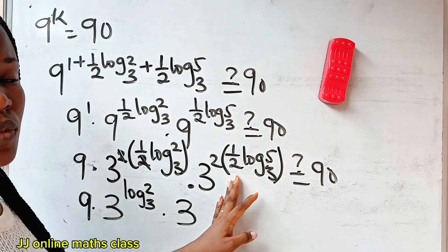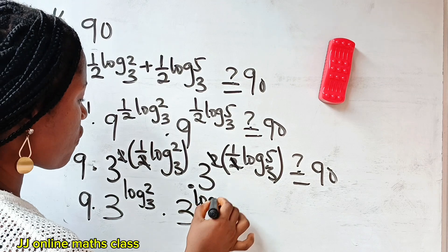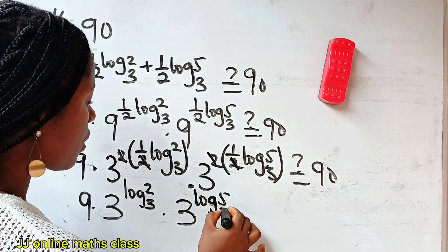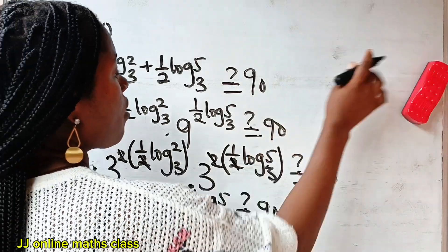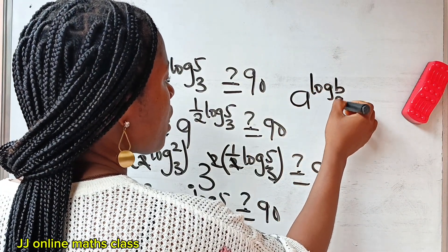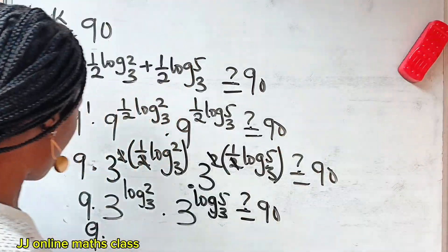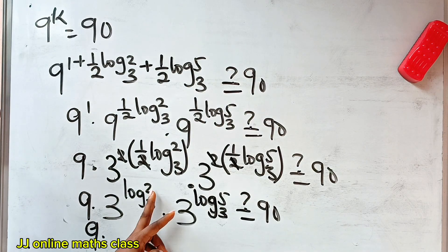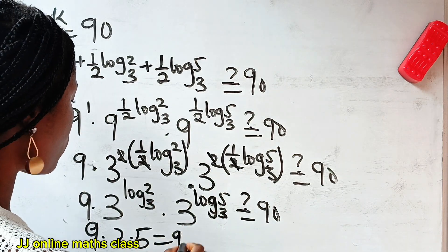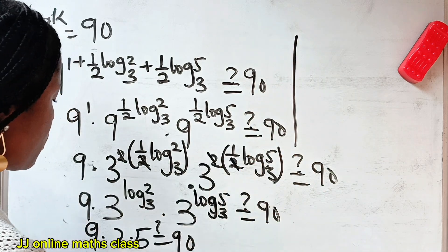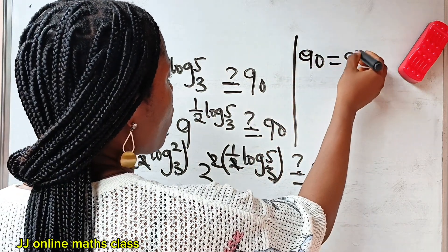We apply the same cancellation here — the 2 and half divide to give 1, leaving log₃5. Now, remember that when you have A to the power of log B base A, once the bases are equal, the whole expression equals B. So since the base 3 matches, 3 to the power of log₃2 equals 2, and 3 to the power of log₃5 equals 5. So we have 9 multiplied by 2 multiplied by 5. That is 2 times 5 equals 10, and 10 times 9 equals 90. So we can see that 90 equals 90 — the answer is confirmed correct.